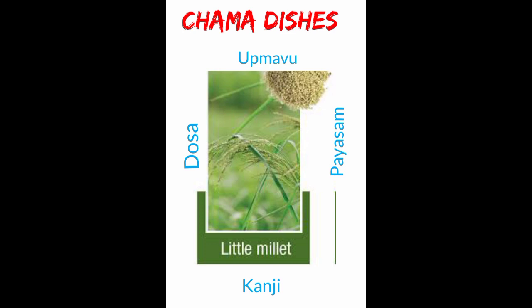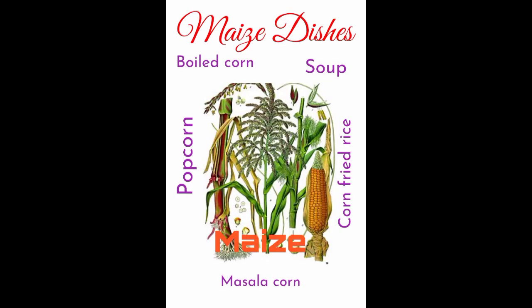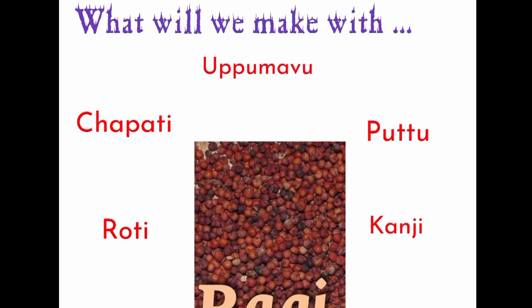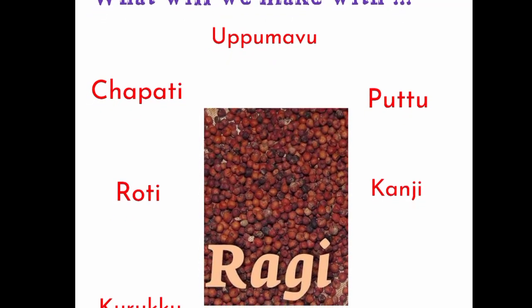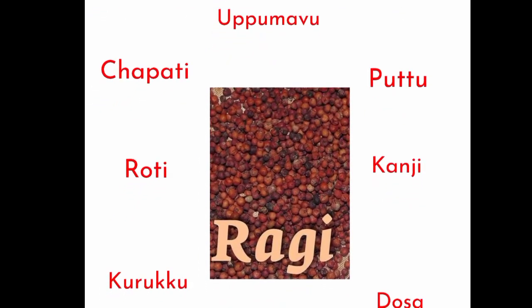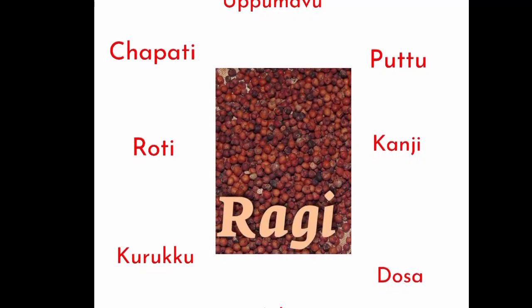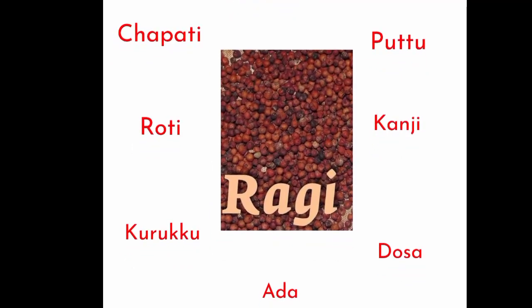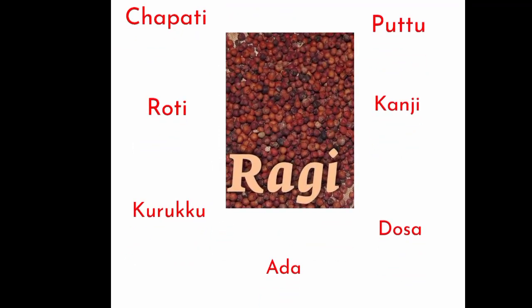Chama (Little Millet) dishes. Maize dishes: Cholam, boiled corn, corn soup, popcorn, fried rice, masala corn. With Ragi (Finger Millet), we can make Uppumavu, Chapati, Roti, Ganji, Korukoḍa, and Dosa-Adai.